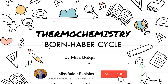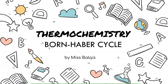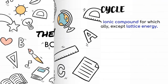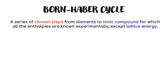Assalamualaikum warahmatullahi wabarakatuh and hello everyone. In this video, we're going to learn about the final subtopic in thermal chemistry called the Born-Haber Cycle. The Born-Haber Cycle is a series of steps from elements to ionic compound, for which all the enthalpies are known experimentally except for lattice energy. The lattice energy we are interested in this cycle is lattice formation, as we're going to discuss further in a moment.